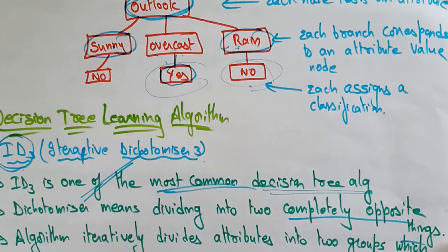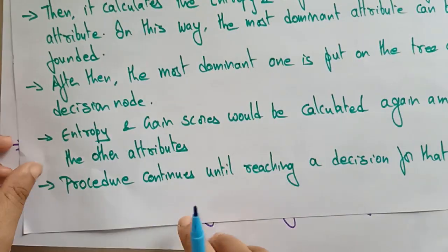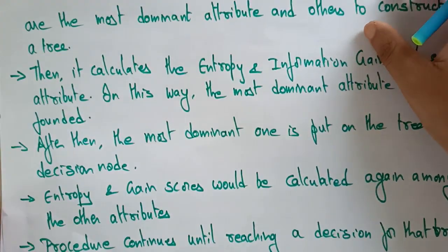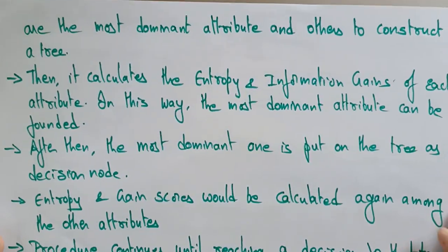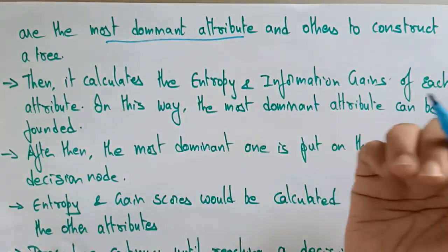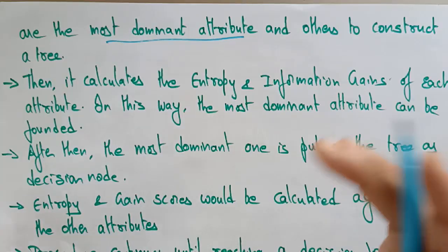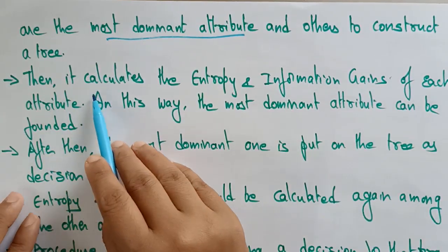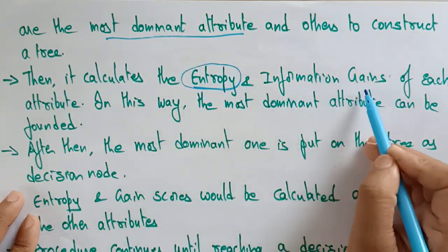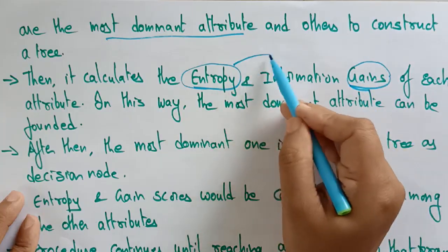The algorithm iteratively divides attributes into two groups — the most dominant attributes and others — to construct a tree. Whatever the most dominant attributes are, we divide on those and implement the tree based on that.